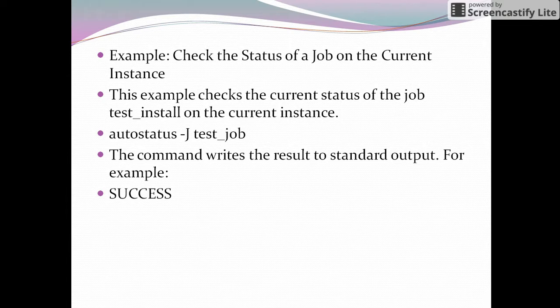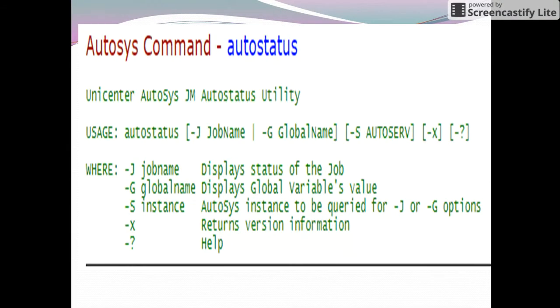This job we're checking on the current instance, so there's no need for the -s option. If you see the usage in the last slide, autostatus -j jobname, and autoserv is the option for -s.